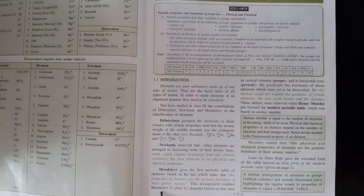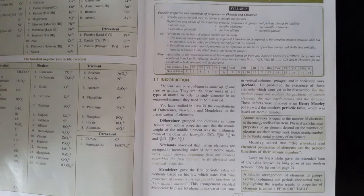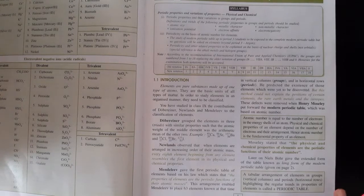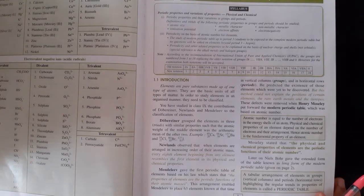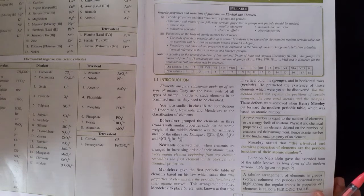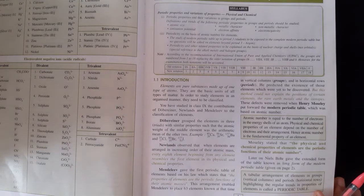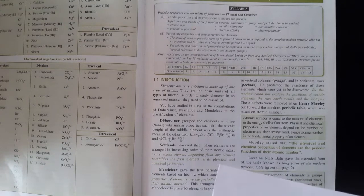This arrangement enabled Mendeleev to place 63 elements known at that time. Mendeleev made the periodic table when only 63 elements were known, so he made the periodic table according to 63 elements. In this periodic table, he classified elements properly into groups and periods.